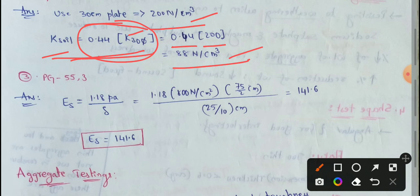These are all simple questions. We will discuss the next question using the Boussinesq empirical equation. A plate load test was conducted with a 75 cm diameter plate on a soil subgrade and yielded a deflection of 22.5 mm under a stress of 800 N per cm².